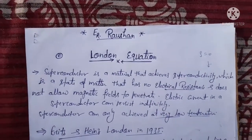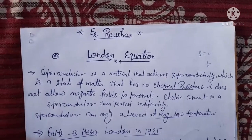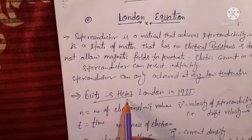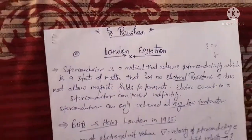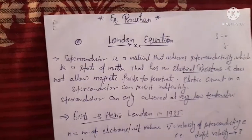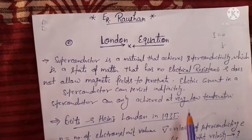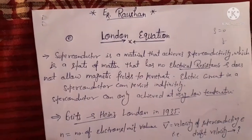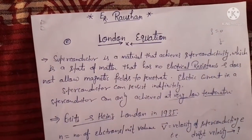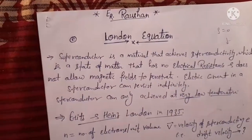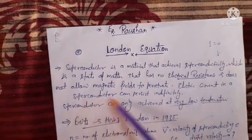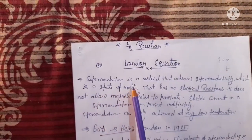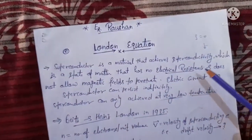The phenomenon of flux penetration inside the superconductor was explained by H. London and F. London — these are the scientists' names — and because of this, the equation is named after them. This superconductor is generally used in maglev trains and MRI machines, where your body is scanned by the MRI machine.